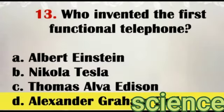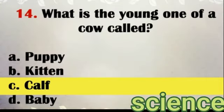Question number 13: Who invented the first functional telephone? Answer: Alexander Graham Bell. Question number 14: What is the young one of a cow called? Answer: Calf.